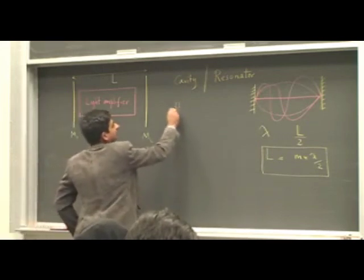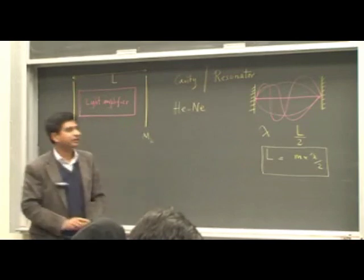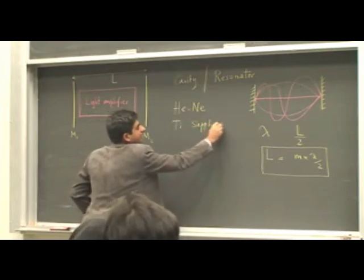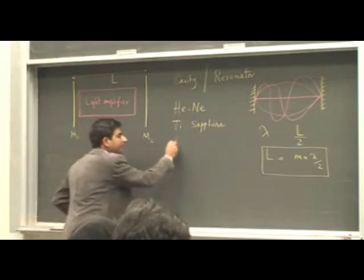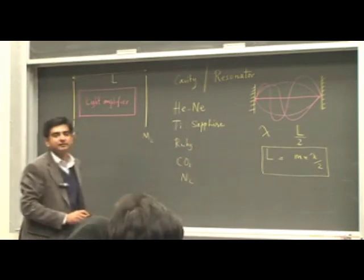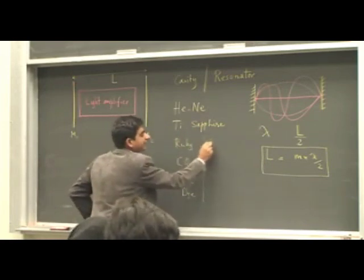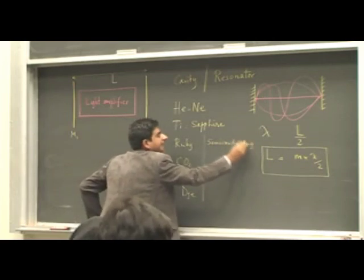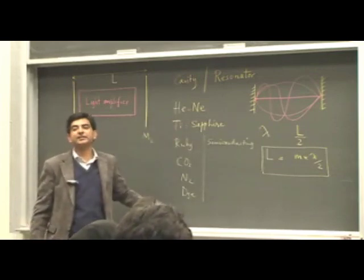So lasers are... The nomenclature of lasers is such that they are named after the medium which lases. For example, in a helium-neon laser, the laser amplifier is a mixture of helium and neon. In a titanium-sapphire laser, the lasing medium is titanium ions inside sapphire, ruby. We can have carbon dioxide lasers, nitrogen lasers, dye lasers. We can have semiconducting lasers and the list goes on and on. So laser is named after the active medium which is lasing.